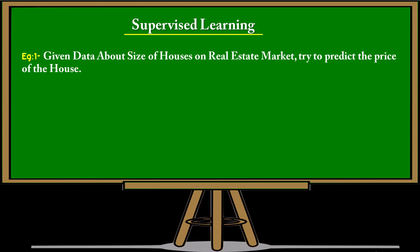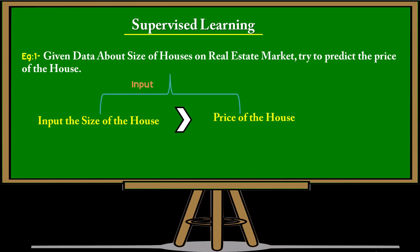Suppose we have been given some amount of data about the size of houses on the real estate market and we have to predict the price of the house. We input the size of the house and it predicts the price. We can think of it as there is some relationship between the input and the output — specifically between the size of the house and the price of the house.